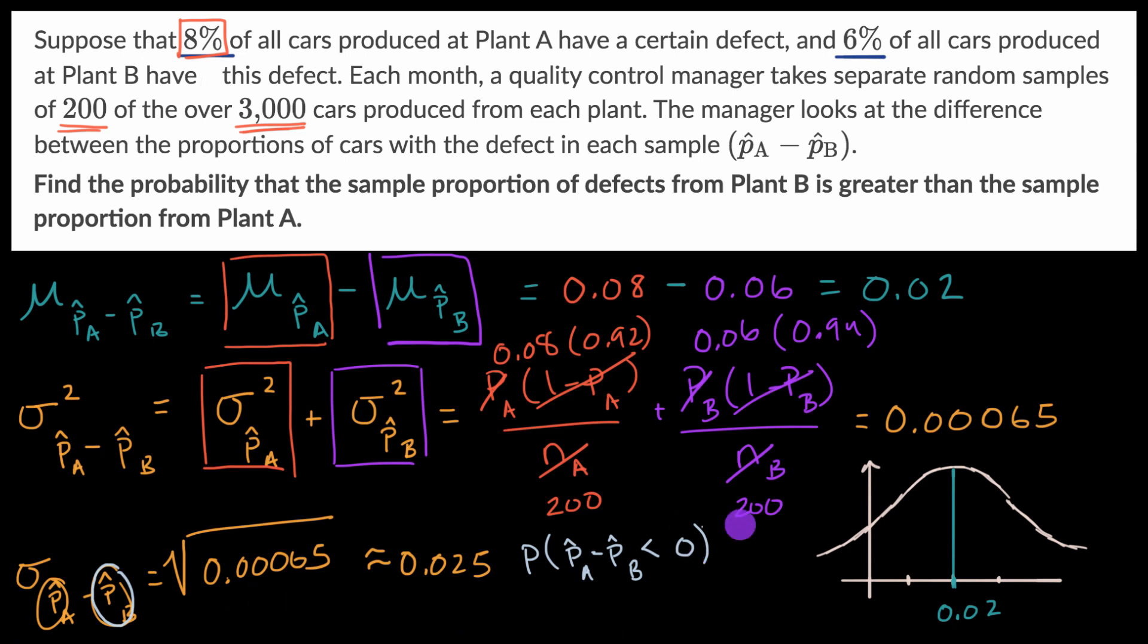Or another way to think about it, that's going to be this area right over here. Now there's a bunch of ways that we can figure out this area, but one of the easiest is to figure out how many standard deviations below the mean this is, and then we could use a Z table. So what we just have to do is figure out what is the Z value here.